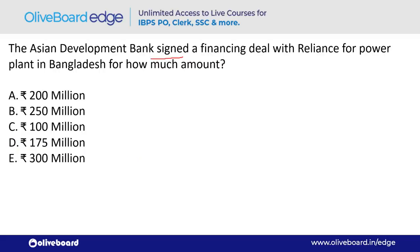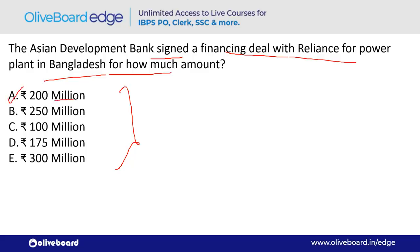Asian Development Bank signed a financing deal with Reliance for a power plant in Bangladesh for how much amount? The deal was for $200 million — option D. ADB stands for Asian Development Bank; its headquarter is in Manila, Philippines.